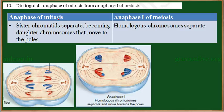During anaphase of mitosis, the sister chromatids get separated and they move towards the opposite pole. The daughter chromosomes — the duplicated chromosomes which were held together — get separated, and both poles receive the daughter chromosomes.